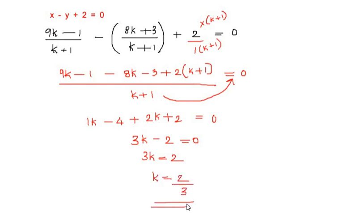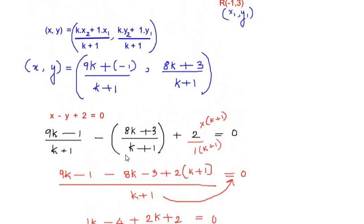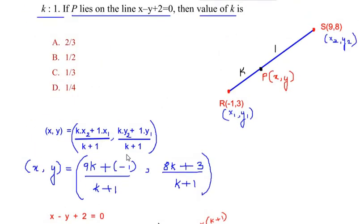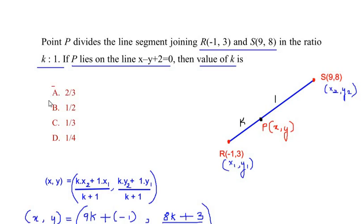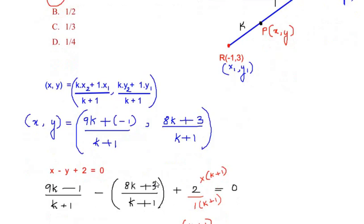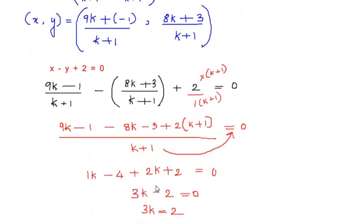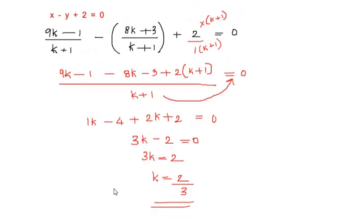This is the value of k. Let us see if we have 2/3 in the options - it is option A. I hope you have understood all the steps. If you are liking my videos, like, share and subscribe to my channel, and thank you for watching.